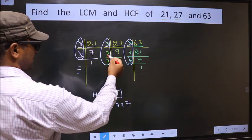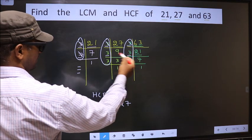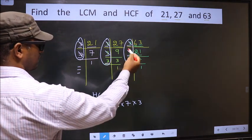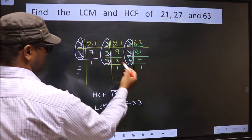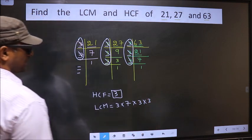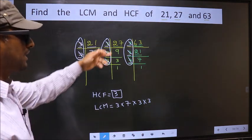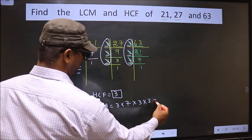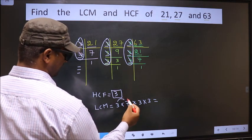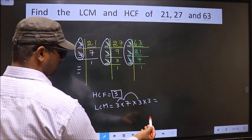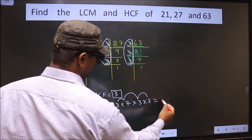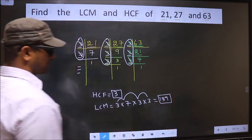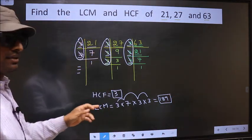Now, here 3 is not cut. Do we have 3 here? Yes. So you cut 3 and write here. This 3 is not cut. Do we have 3 here? No. So you cut 3 and write here. Now each number has been cut. Therefore, our LCM is 3 into 7, 21 into 3, 63 into 3, 189 is our LCM. Am I clear?